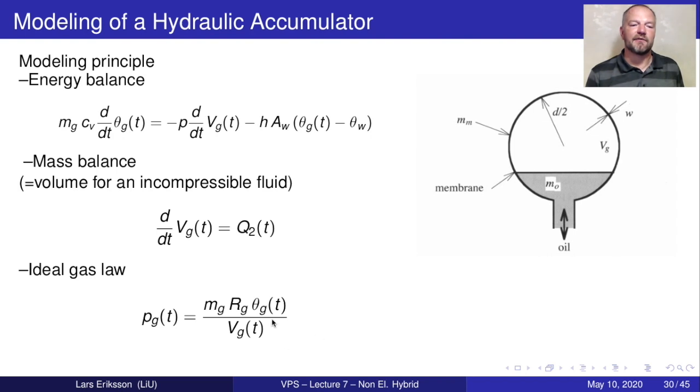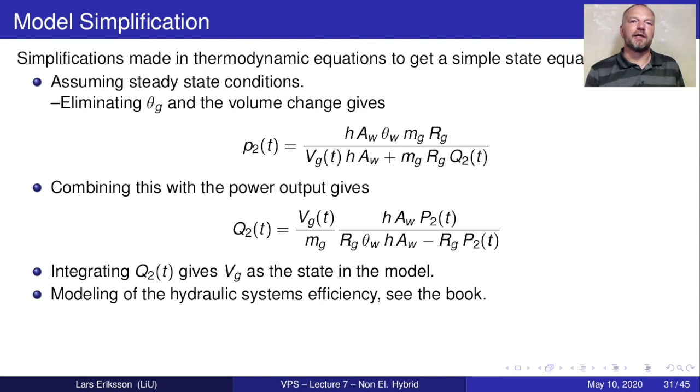Finally, to tell how the volume is connected to the temperature and to the pressure, we use the ideal gas law. The power generation from the hydraulic accumulator is the same thing as the pressure in the hydraulic accumulator times the volume flow out, so this is p times v dot. To get the simple model that can be used to analyze and simulate the system, we are assuming steady state conditions for the temperature. If we combine this with the power output, we get the power output that gets connected to the volume flows.